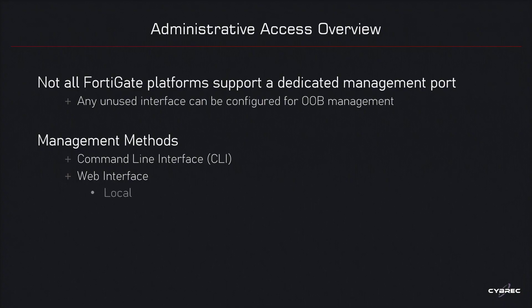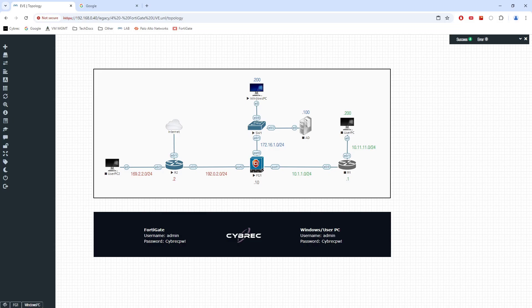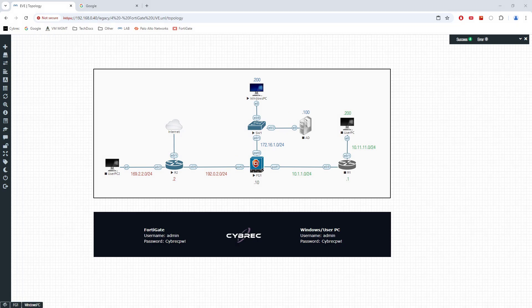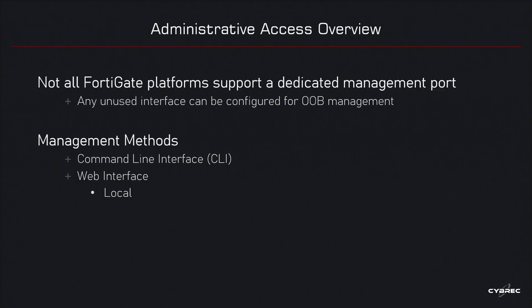The GUI is going to be our primary method for configuring FortiGate systems. We'll use a web interface with what is known as local administration — connecting to the firewall directly from the management station. In my case, a Windows PC will connect to port 3, which will serve as the management interface. I'll open a browser on the Windows PC and connect to the firewall to manage it.